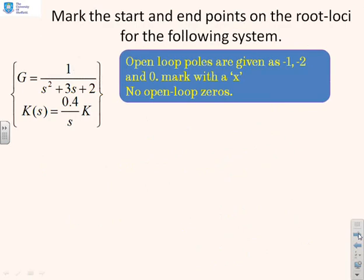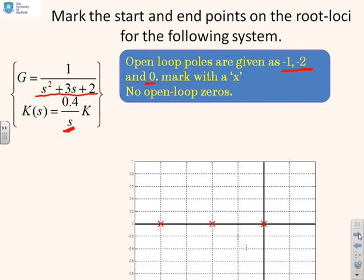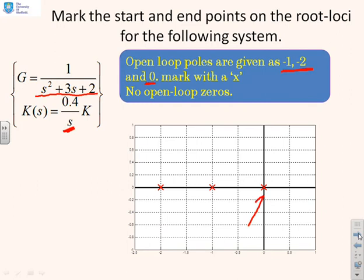Now some questions: mark the starting and end points on the root loci for the following systems. For the first system, compute the open-loop poles — they are at minus one, minus two, and zero. There are no open-loop zeros. On the diagram, mark a cross at zero, a cross at minus one, and a cross at minus two. There are no open-loop zeros, so nothing else is needed.